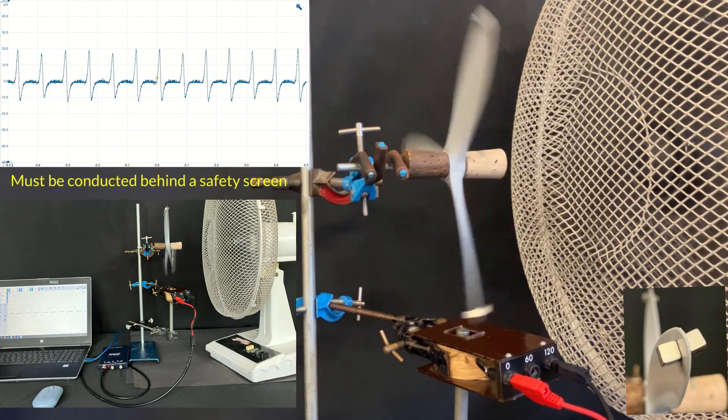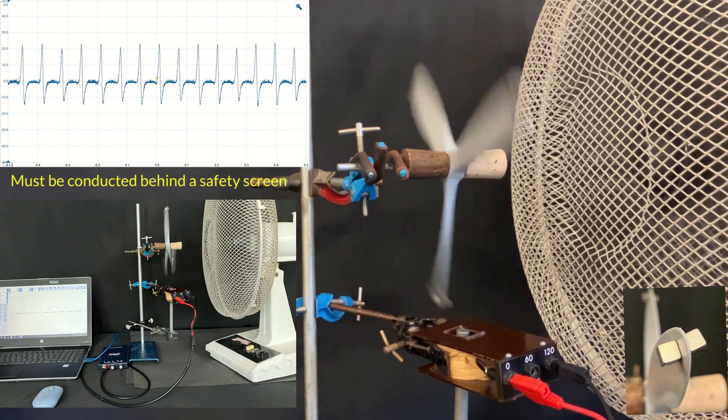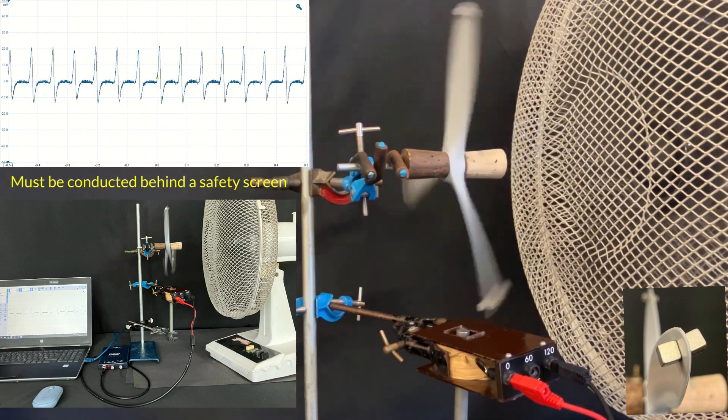Something interesting happens at this speed, where the blades appear to stop, and there now appear to be six of them. Let's watch them again appear to stop and be six of them.